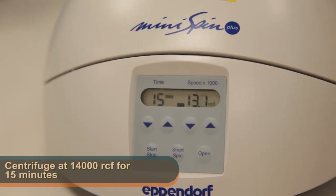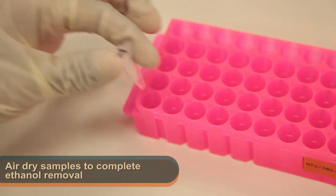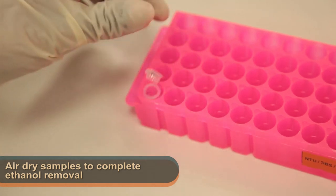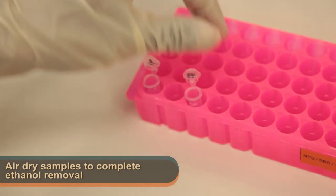Next, centrifuge the samples at maximum speed for 15 minutes and then remove the supernatant. Air dry the samples as follows to complete the ethanol removal. Do take note not to over dry the sample pellet.